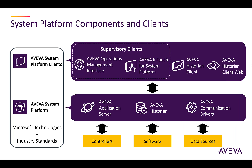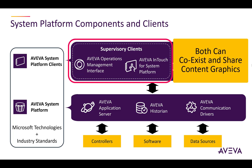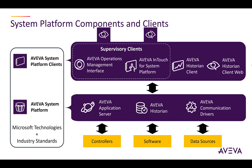The System Platform clients, on the whole, access information from System Platform. It is comprised of the following products — the supervisory clients. There are two visualization clients: Operations Management Interface, based on an object-oriented and rapid design visualization framework, and InTouch for System Platform, based on the InTouch HMI software. Both components can coexist in the same System Platform solution and share the same content graphics. They run the operator interface and provide real-time access to application server data, alarms, and events. There are also two web clients for both Operations Management Interface and InTouch for System Platform, giving users instant access to their supervisory clients and supporting several common browsers.